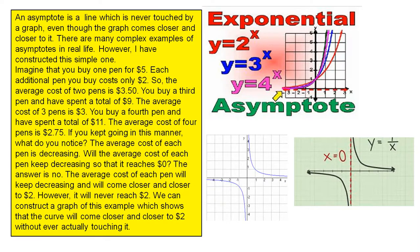You buy a fourth pen and have spent a total of $11. The average cost of four pens is $2.75. If you kept going in this manner, what do you notice? The average cost of each pen is decreasing.